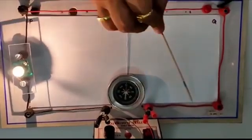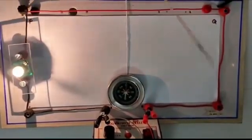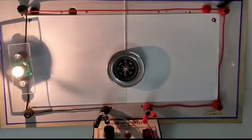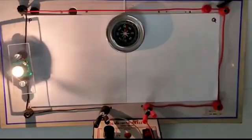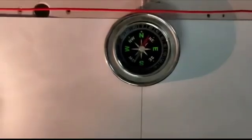Now here we have changed the terminal of the battery. So now the direction of current is from point Q to point P. Observe this change carefully and note down your observation in your table.